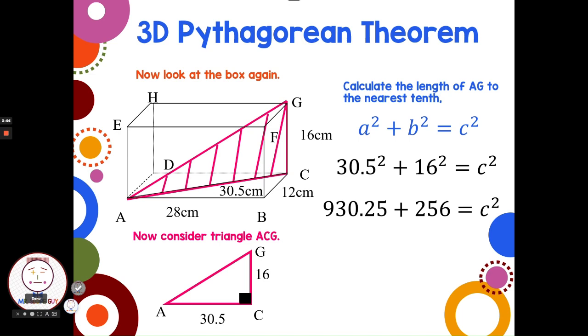We have 930.25 plus 256, and we have 1186.25. That is for c squared. To find c, we take the square root, and we get 34.4. And our directions were round to the nearest tenth. So we want to put off rounding until the last possible moment to get as close of an answer as possible.